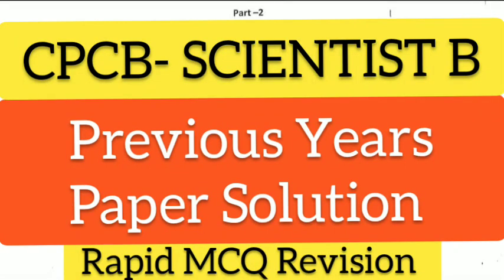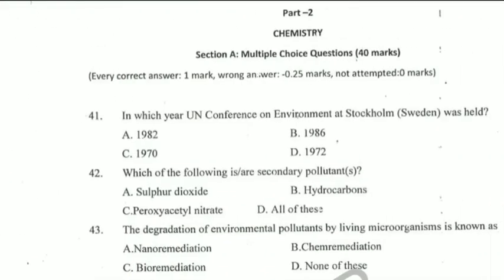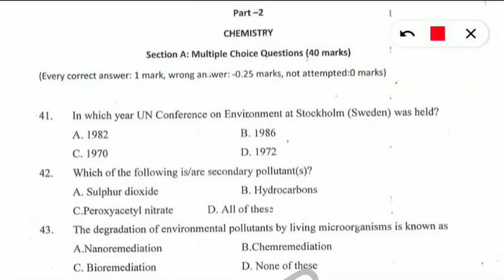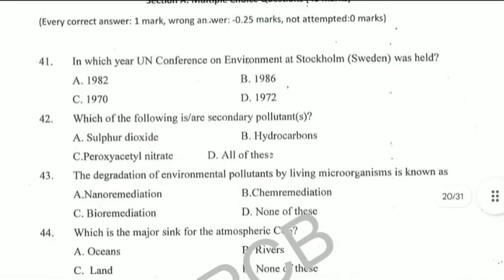Hello everyone and welcome back to ZACKLIT Educational channel. In this video we are going to solve previous year questions from the CPCB Scientist B examination — questions for both chemistry and environmental science students who will have a single combined examination. Get ready with your notes, as these questions will be very important in upcoming examinations. We had already discussed three questions in the previous video; a link is provided in the description. We start with question number 44, which is from the environmental chemistry portion.